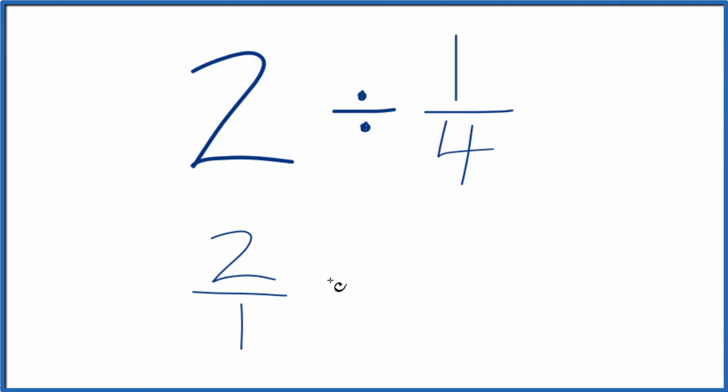And instead of division, we're going to multiply by the reciprocal of one-fourth. So we move the numerator down, the denominator up, and that gives us the reciprocal of one-fourth, which is four over one.